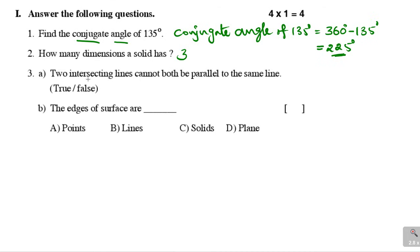Third one: two intersecting lines cannot both be parallel to the same line — true or false? Intersecting lines means the two lines intersect at some point. These two cannot both be parallel to the same line. If these two lines were parallel lines, then these two would be parallel to the other line. So these two are intersecting lines and cannot be parallel to the same line. So this is true.